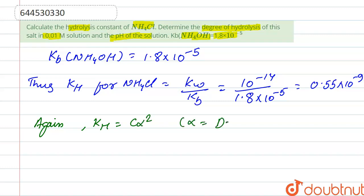Alpha, the degree of hydrolysis, can be calculated by under root Kh upon C, where C is concentration.